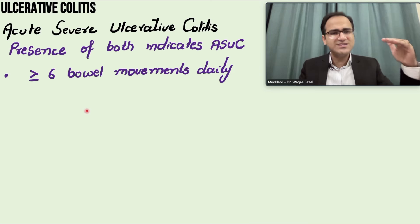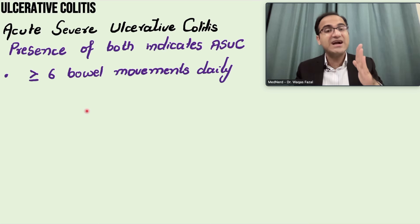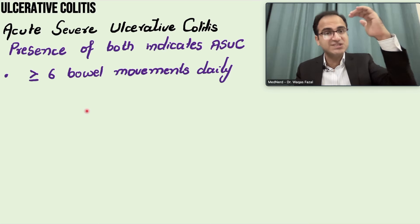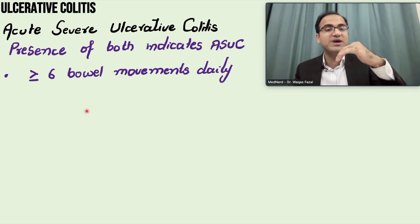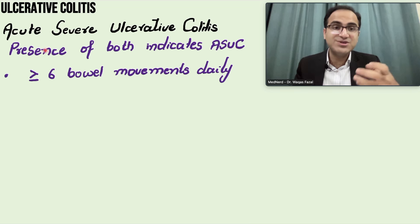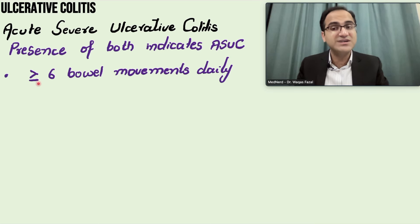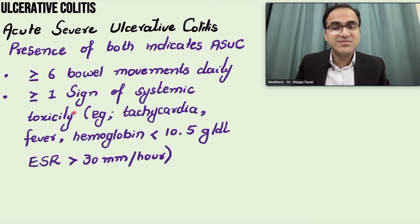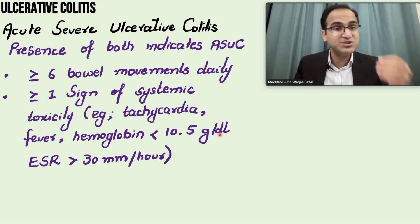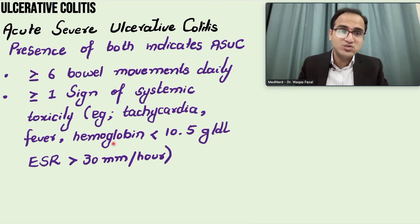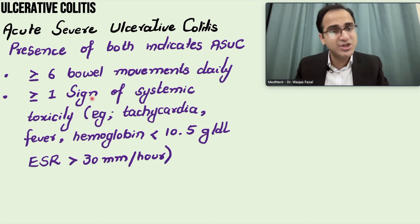As I said in my previous video, ulcerative colitis is a chronic disease in which patients get exacerbations — worsening of the disease — after which they return to their normal state. Those worsening episodes are called acute severe ulcerative colitis or fulminant colitis. Presence of greater than or equal to 6 bowel movements every day with one or more signs of systemic toxicity — tachycardia, fever, hemoglobin less than 10.5 g/dL, bloody diarrhea, ESR greater than 30 mm/hr — indicates acute severe ulcerative colitis.